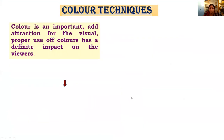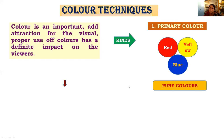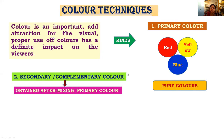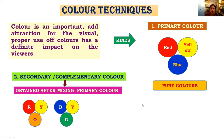Next, color is very important for visuals — it provides attraction, but must have a definite impact on the viewers. There are different kinds of colors. The first is primary colors, which cannot be obtained by mixing other colors: red, yellow, and blue — also called pure colors. The second type is secondary or complementary colors, obtained by mixing two primary colors: red + yellow = orange, blue + yellow = green, blue + red = violet or purple.